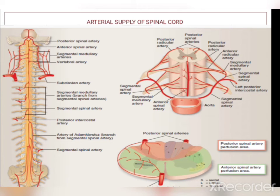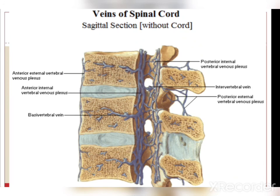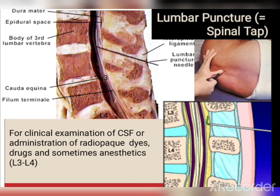The arterial supply of the spinal cord is by the anterior spinal and posterior spinal arteries, which are branches of the vertebral artery. Venous drainage is by the internal vertebral venous plexus. Regarding lumbar puncture (also known as spinal tap): for clinical examination of CSF, or administration of radiopaque dyes, drugs or anaesthetics, a needle is inserted into the intervertebral space between L3 and L4 to reach the subarachnoid space, from where CSF is drained for examination.